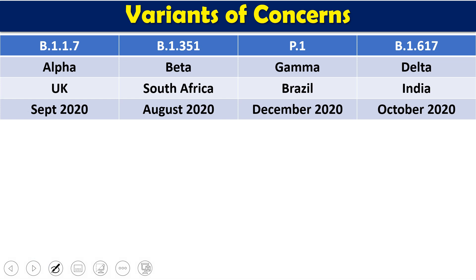According to WHO, four variants of concern have been identified. The first is B.1.1.7, now called Alpha, first detected in the UK in September 2020. The second is B.1.351, called Beta, first detected in South Africa in August 2020. The third is P.1, called Gamma, first detected in Brazil in December 2020. The fourth is B.1.617, called Delta, first detected in India in October 2020 — which also has sub-variants including Delta Plus and Kappa.